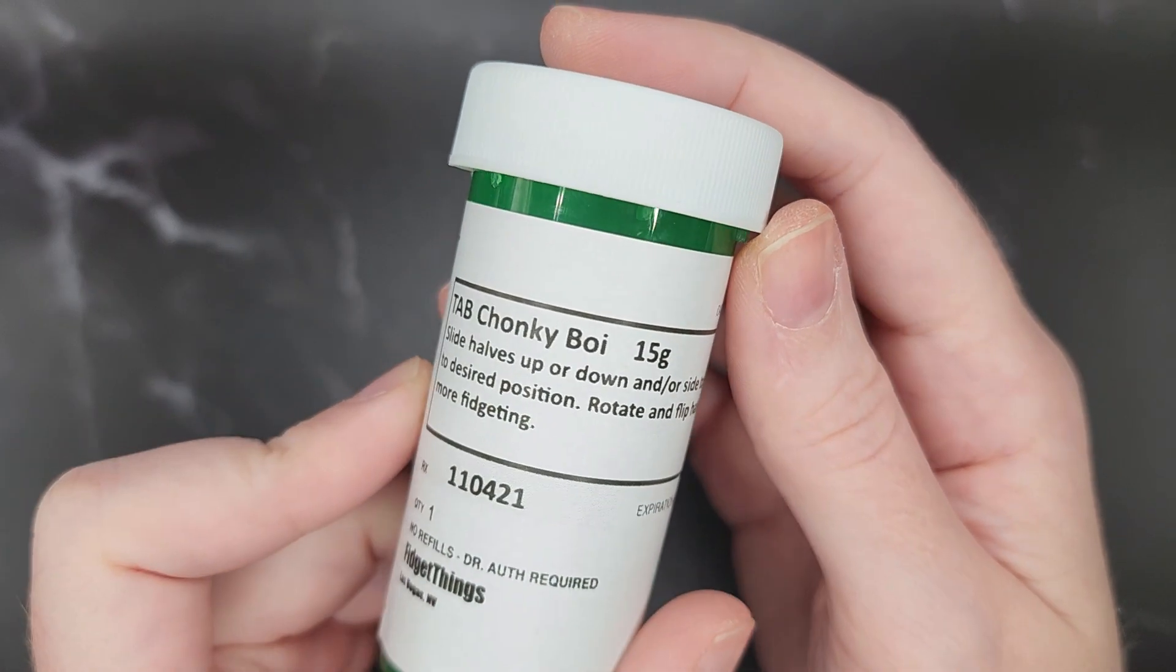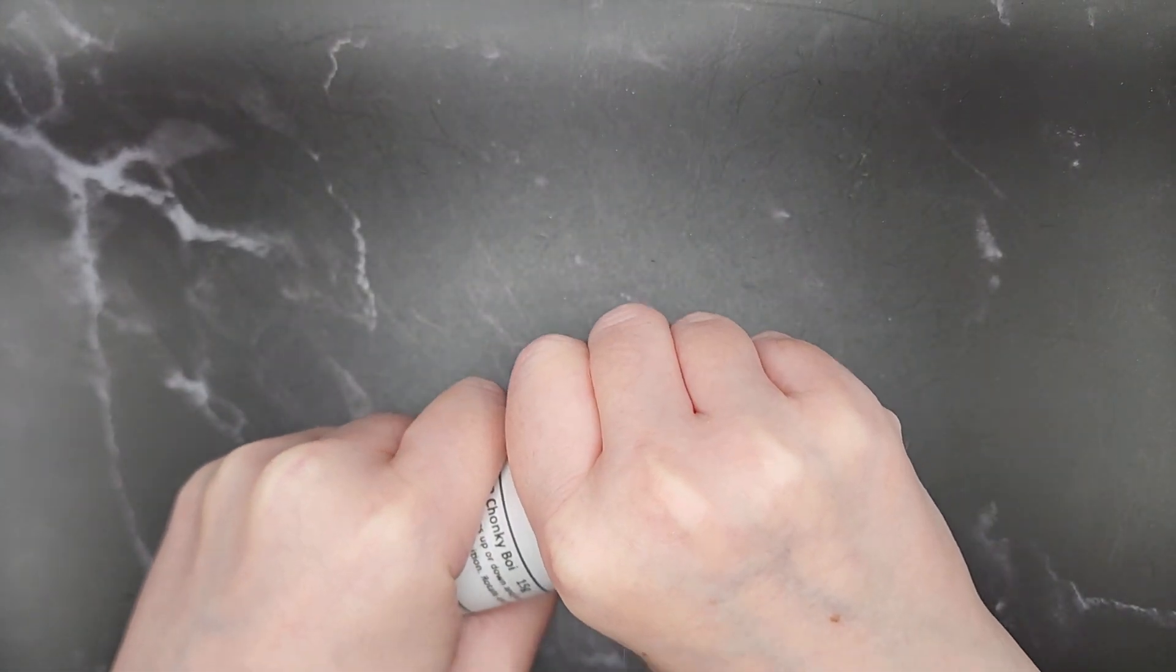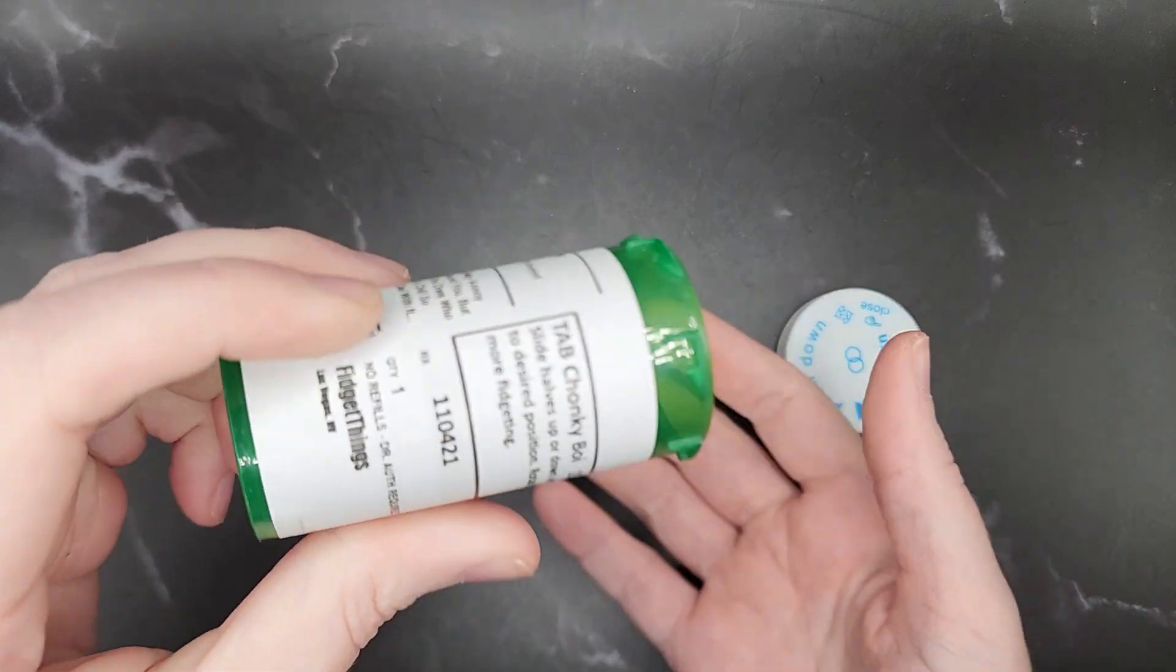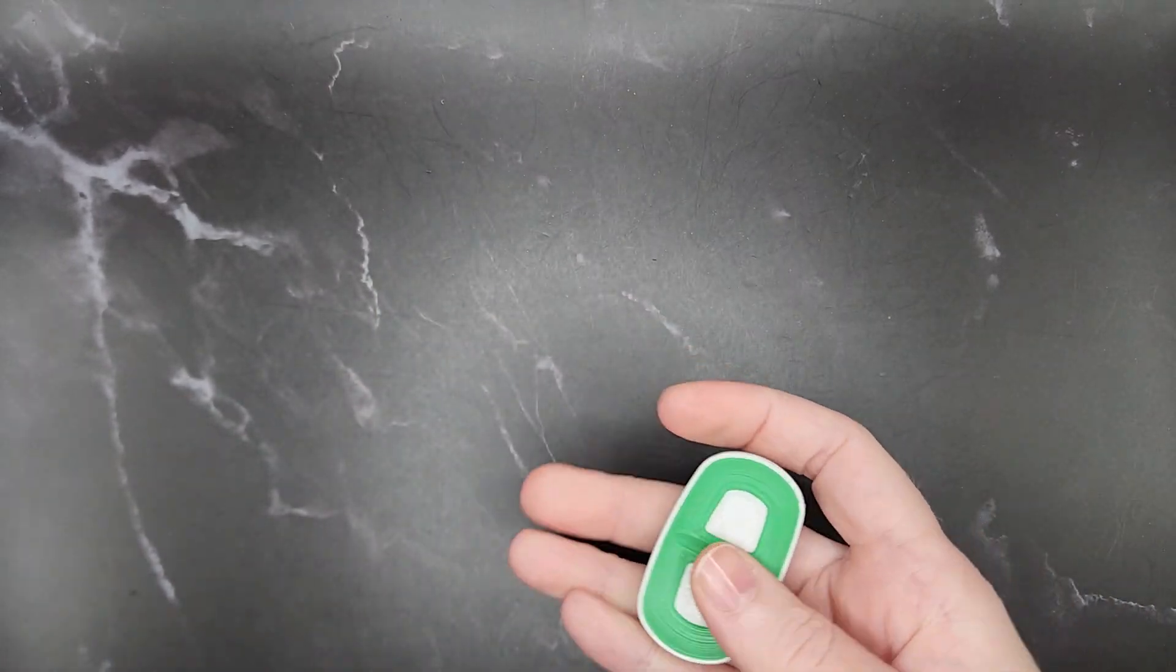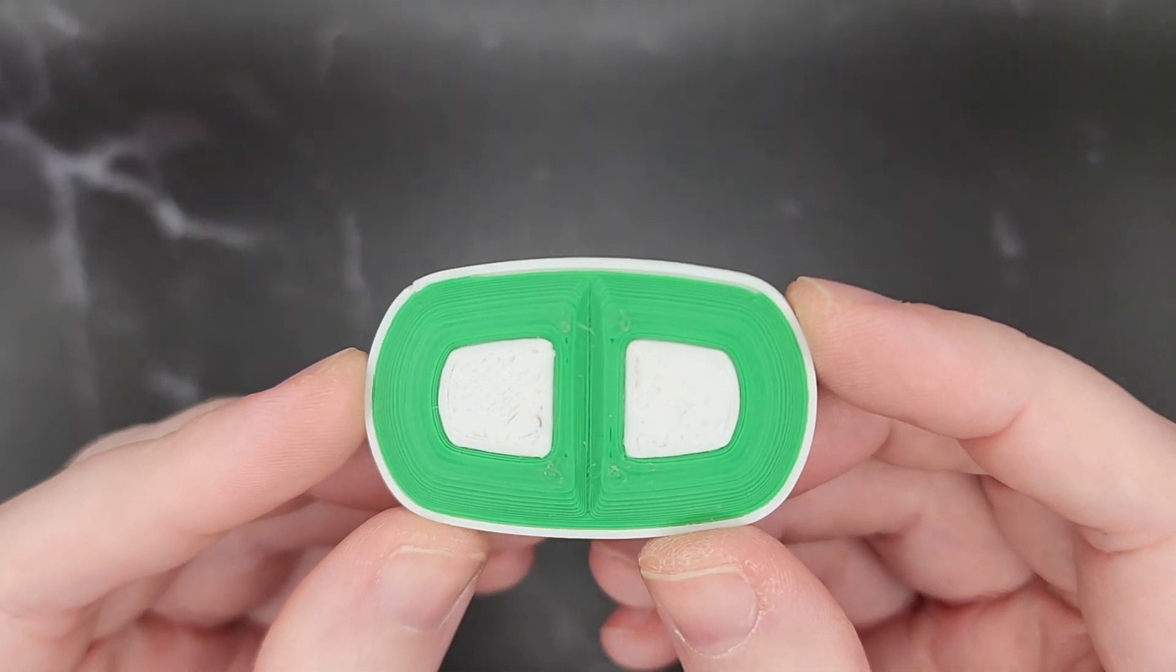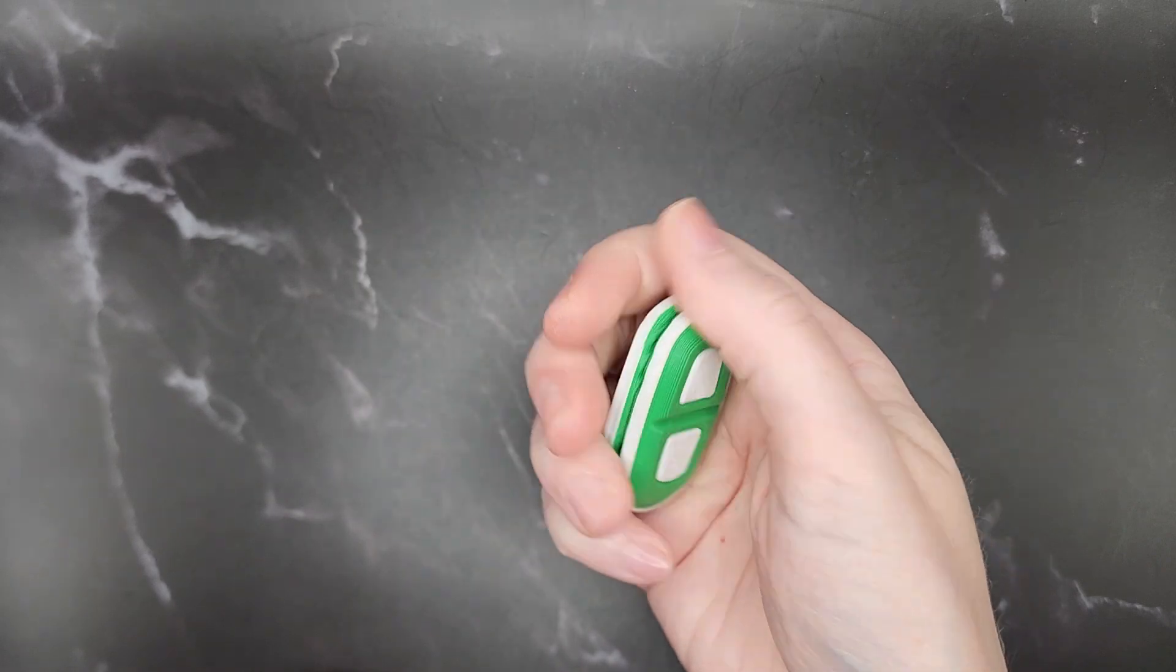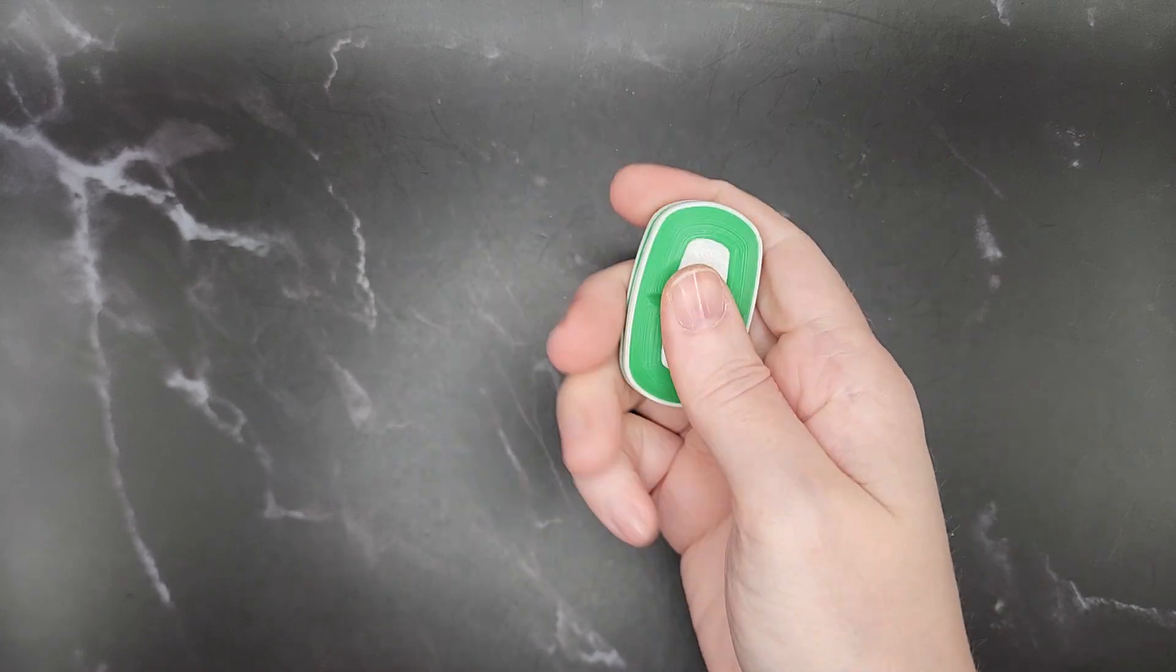So yeah what else does it say? Slide halves up or down and or side to side for desired position. Rotate and flip halves for more fidgeting. So let's see what color did I get? I got the green one. So yeah this is the tab chonky boy, the 3d one. And I like it. I was definitely thrown off by how light it was. It's a loud guy. Snappy snap. It is a two click.